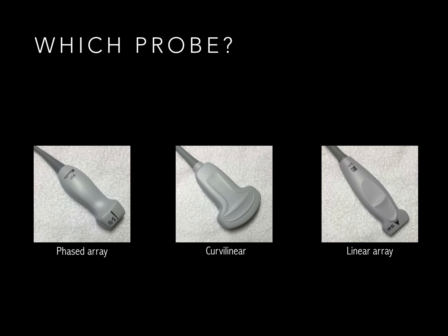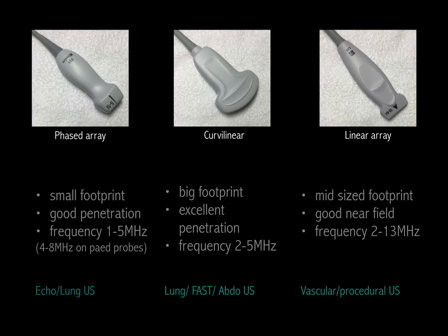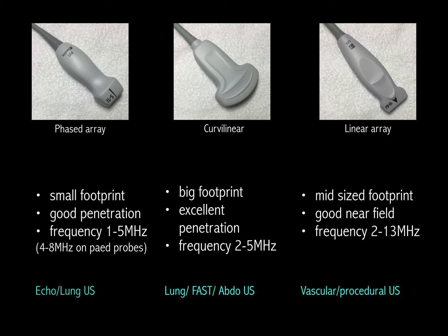Often your machine will have a range of probes or transducers to choose from. Which one you use depends on what kind of scan you're planning to do. For echo, you want to use a phased array probe. The small footprint with a sector-shaped beam allows scanning the heart from between the narrow rib spaces. For penetration, we typically use frequencies of 2 to 4 megahertz in adults, or higher in children where less depth of penetration is required. A transesophageal echo probe is just a phased array probe mounted on a modified gastroscope, and often operates at higher frequencies because lower depths of penetration are required.